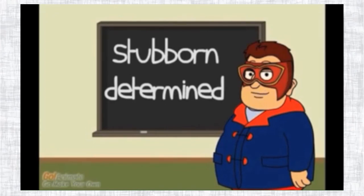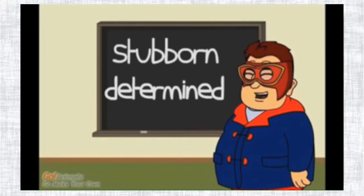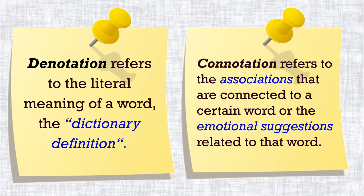Another example — describing a character: words like 'stubborn' and 'determined' have closely the same denotation, but 'stubborn' has a rather negative connotation and 'determined' has a more positive one. This gives the reader a clearer idea of what the writer wanted them to understand. Now you know how to differentiate between words to show what you want the reader to know. Goodbye everyone, see you in the next episode of Captain English!